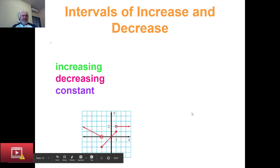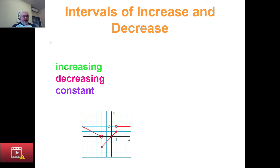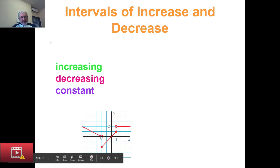For intervals of increase and decrease, we sweep from left to right. From minus infinity to −2 (excluding −2), the function is decreasing. From −2 to 1, the function is increasing. From 1 onwards, the function is constant — it remains a horizontal line.